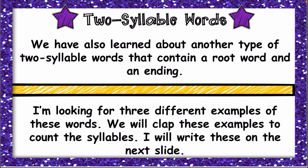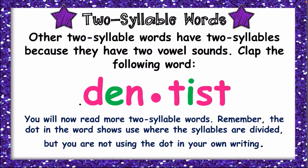A root word and an ending — I'm looking for three different examples of these words. We will clap these examples to count the syllables. I will write this on the next slide. Other two-syllable words have two syllables because they have two vowel sounds. Clap the following words — we have 'dentist'.